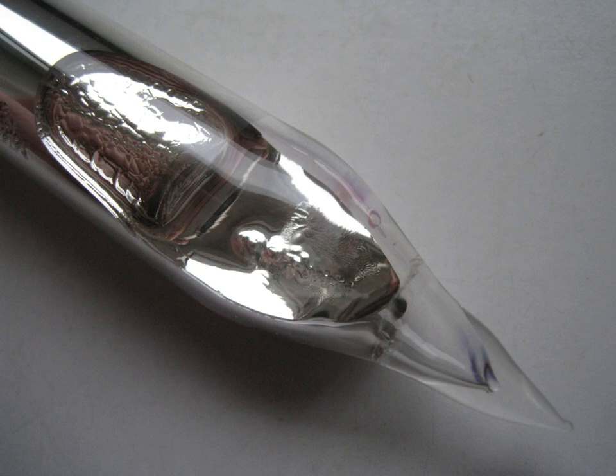Like other alkali metals, rubidium metal reacts violently with water. As with potassium, which is slightly less reactive, and caesium, which is slightly more reactive, this reaction is usually vigorous enough to ignite the hydrogen gas it produces.